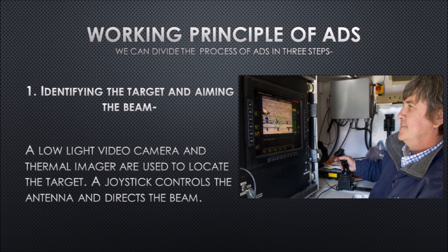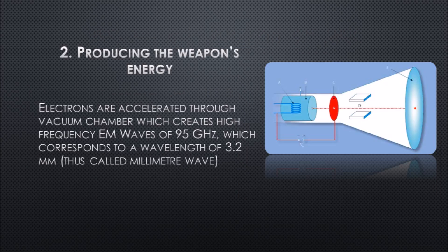Now we will see the working principle of ADS in three steps. The first step is identifying the target and aiming the beam. A low light video camera and thermal imager are used to locate the target. A joystick controls the antenna and directs the beam.